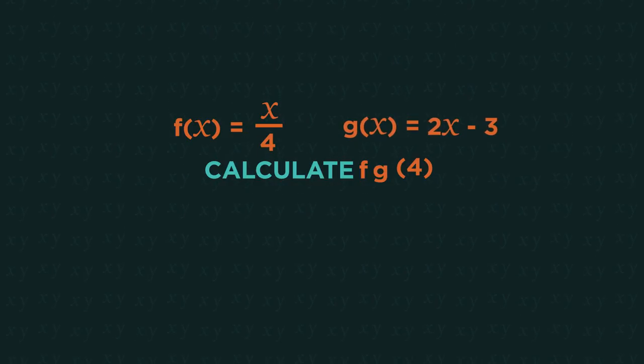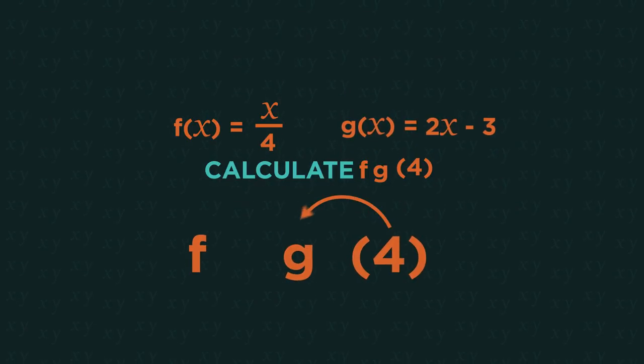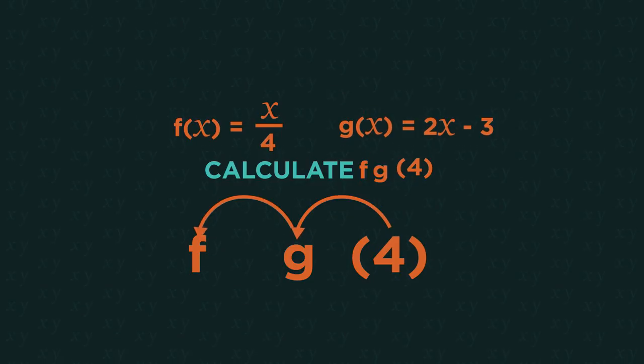We read backwards for functions. So we put 4 into g, and then the output of that into f.